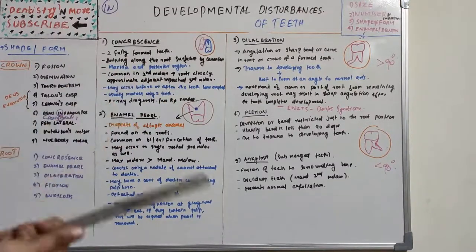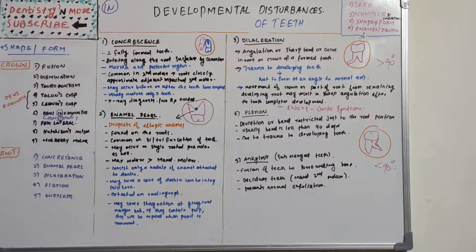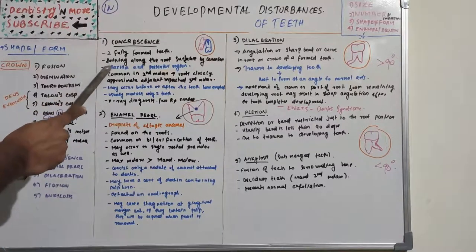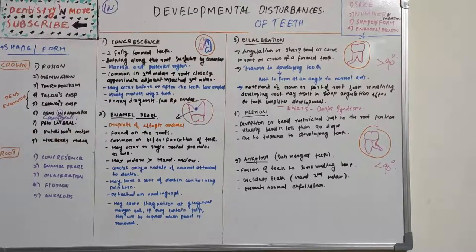The crowns are different and separate. Most commonly it is seen in the maxilla and in the posterior region compared to the anterior region. Compared to the mandible, it is commonly seen in the maxilla. The most common teeth involved are the second molars, whose roots closely approximate an adjacent impacted third molar.